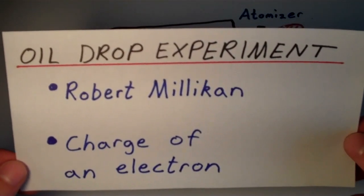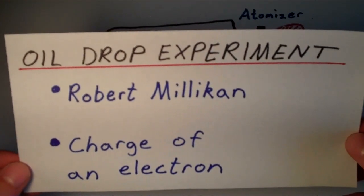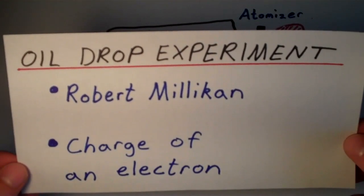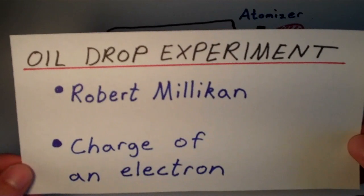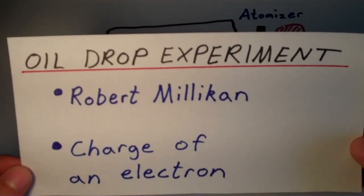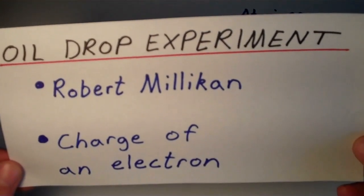So by this time, the existence of the electron was known, compliments of J.J. Thompson's cathode ray tube experiment, but the charge of the electron had not been known yet. So what we're going to do is we're going to walk through the experiment and take a look at the apparatus that Robert Millikan used and some of the reasoning that he used to determine the charge of a single electron.